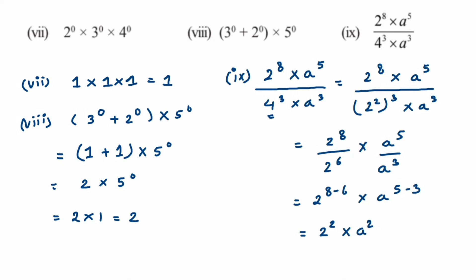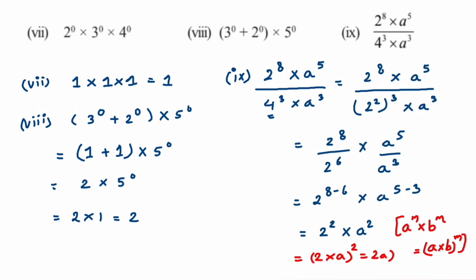Now here's the interesting part: the bases are different but powers are same. We use a new law — a to the power m multiplied by b to the power m equals (a into b) to the power m. So 2 to the power 2 multiplied by a to the power 2 becomes (2a) to the power 2. That's the answer for question 9.